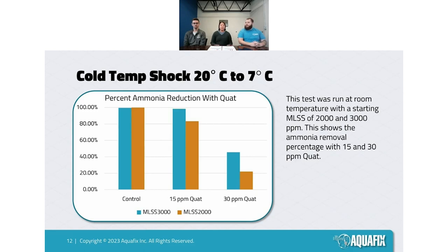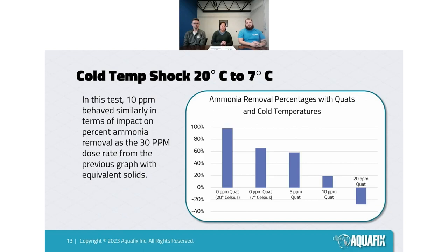At a high dose of 30 ppm quat, it didn't matter what mixed liquor concentration we had — after the cold shock down to 7°C, we lost quite a lot of ammonia removal capability. That illustrates both the effects of quat and how cold temperature compounds those effects.